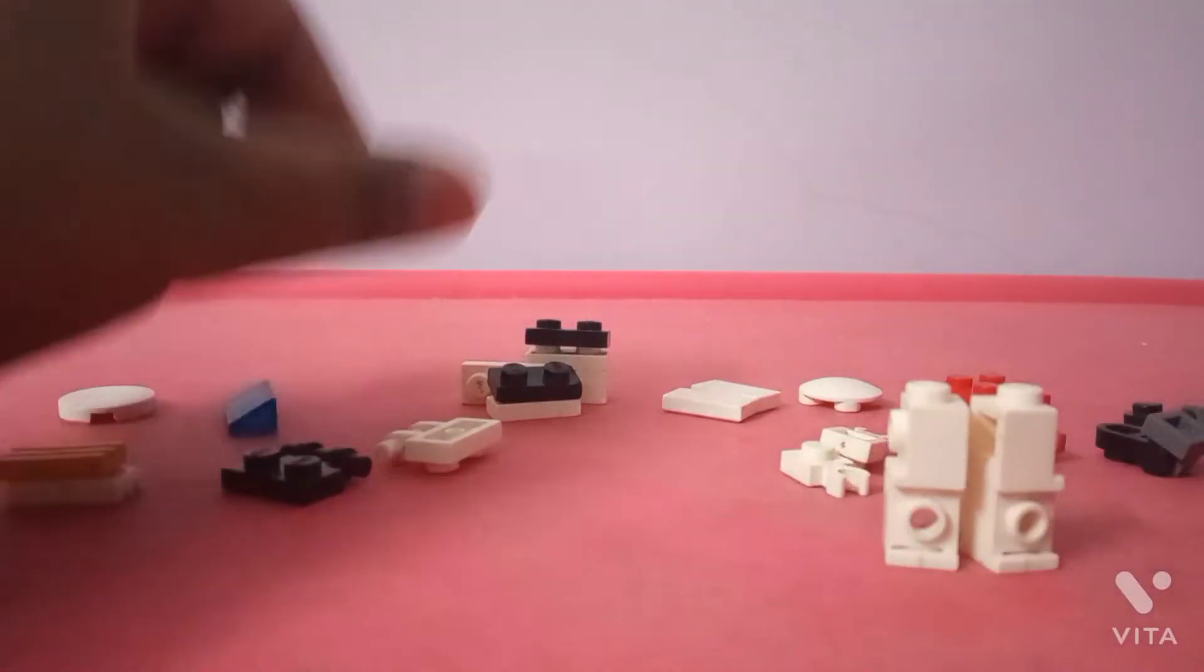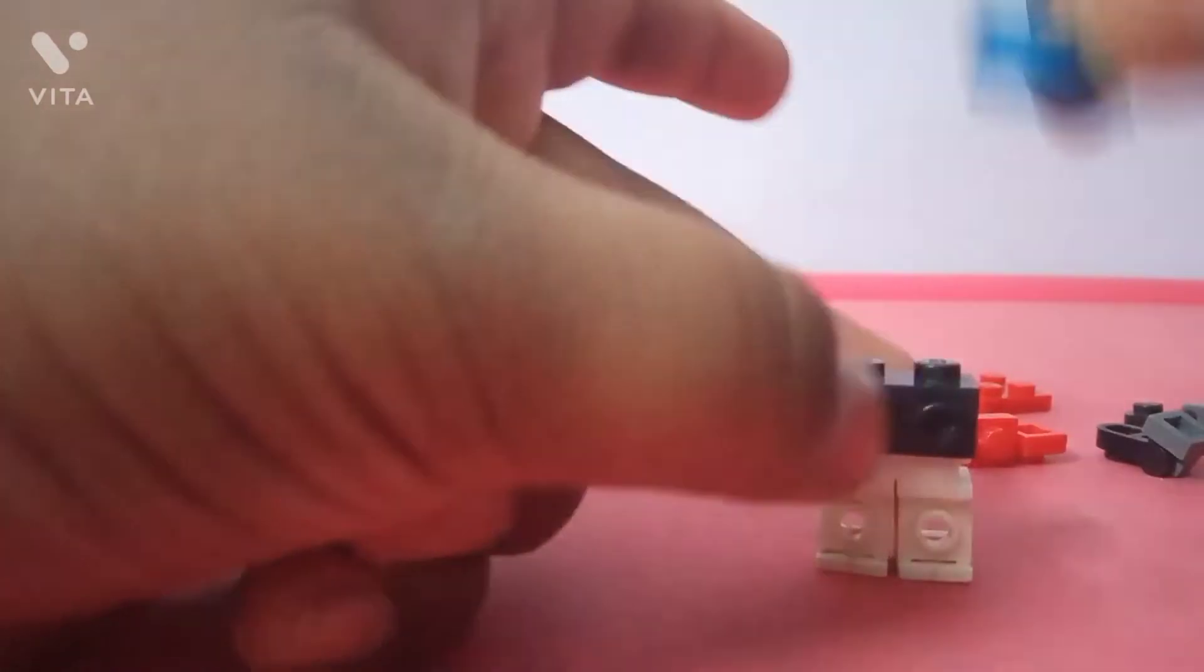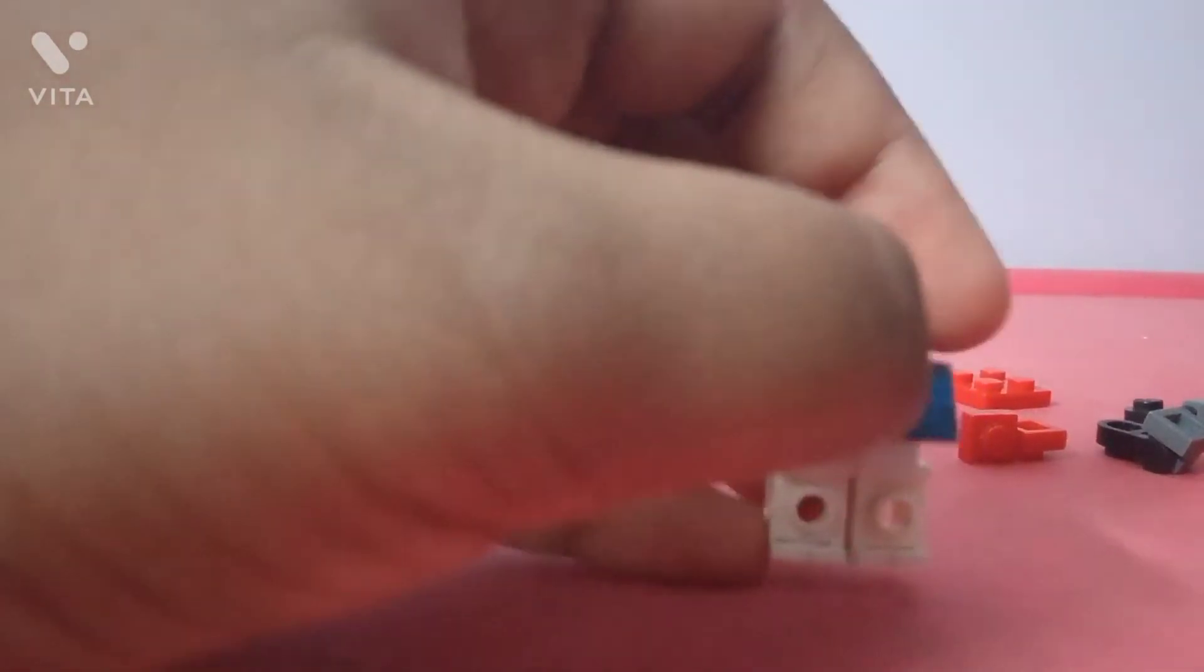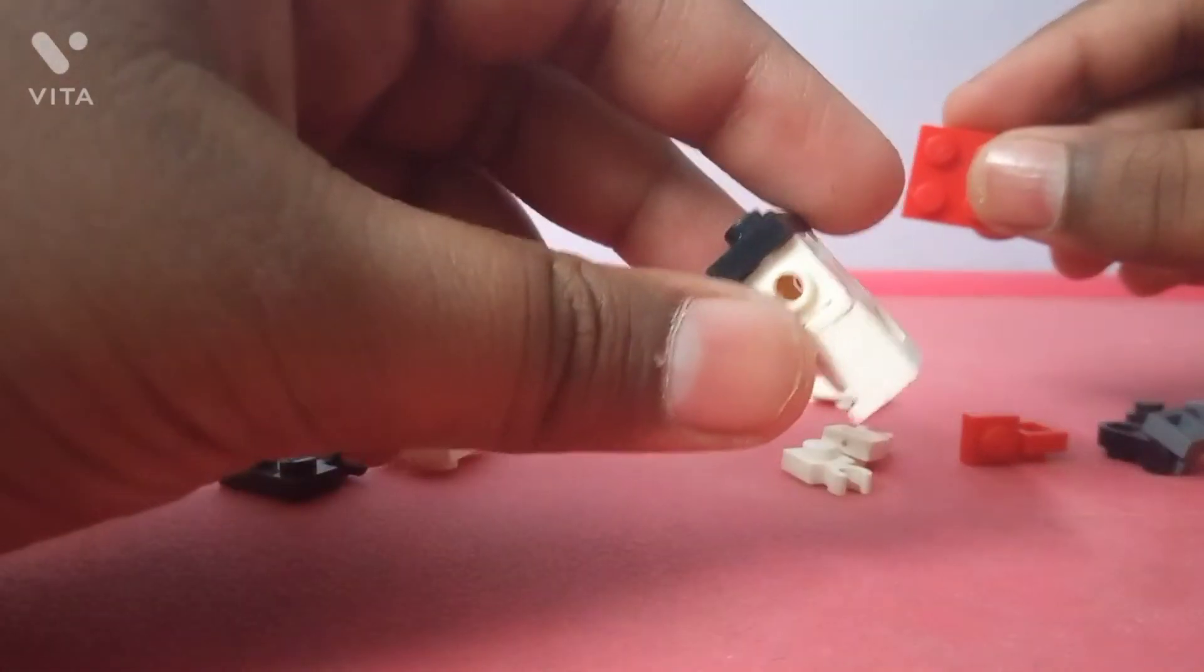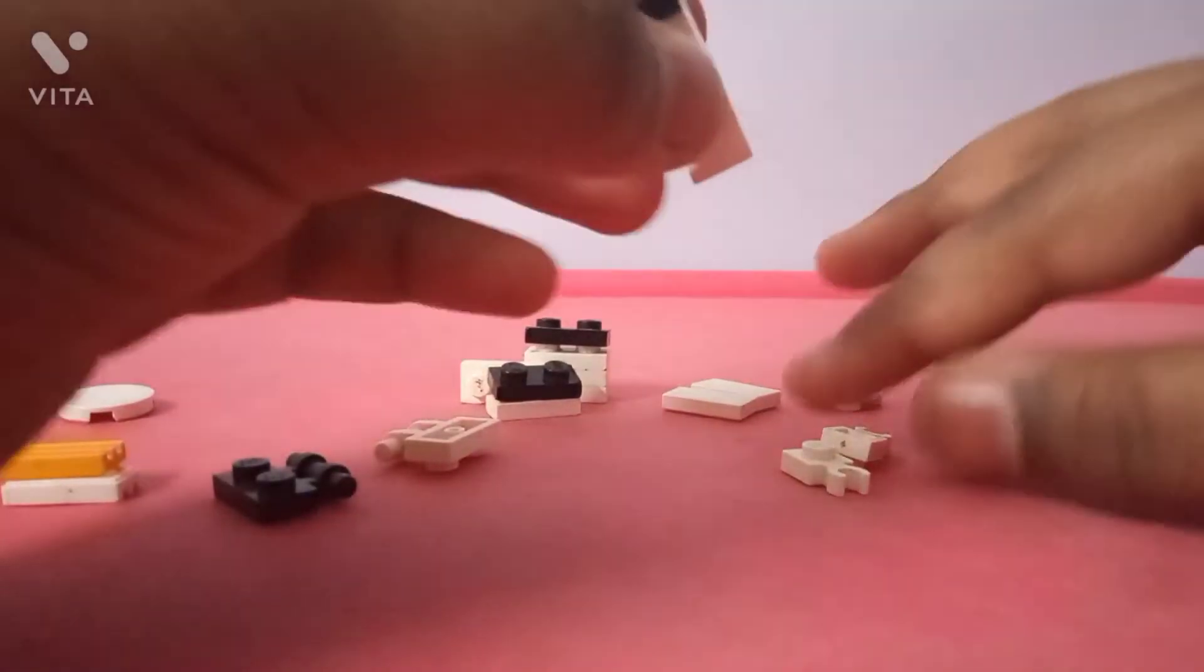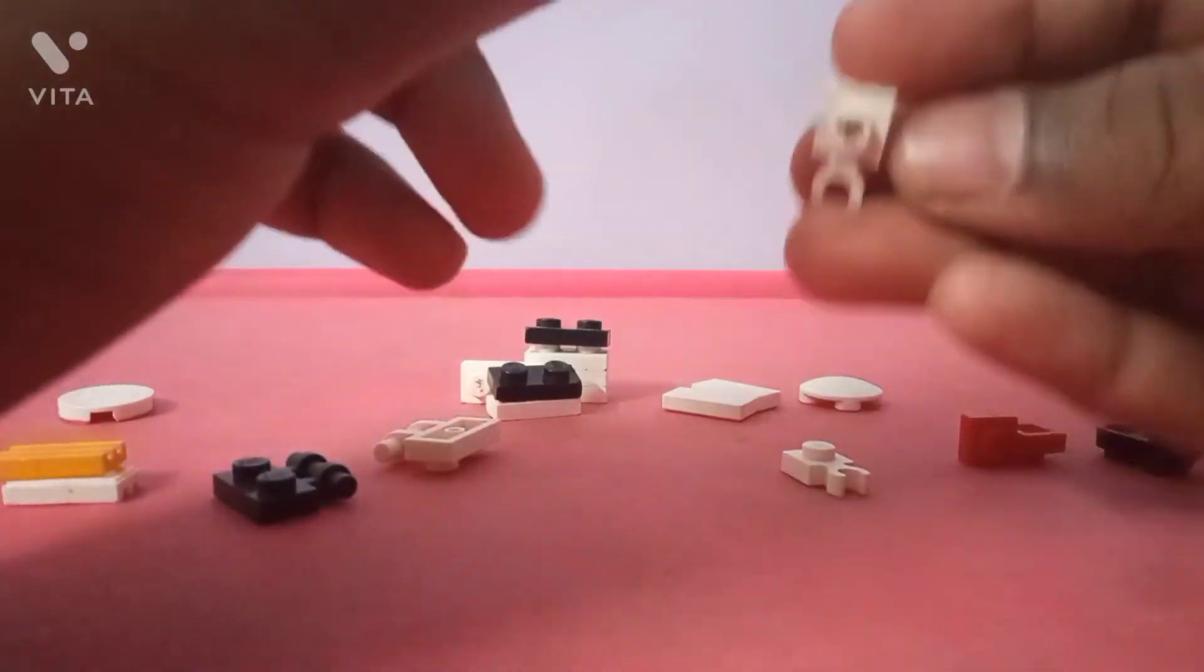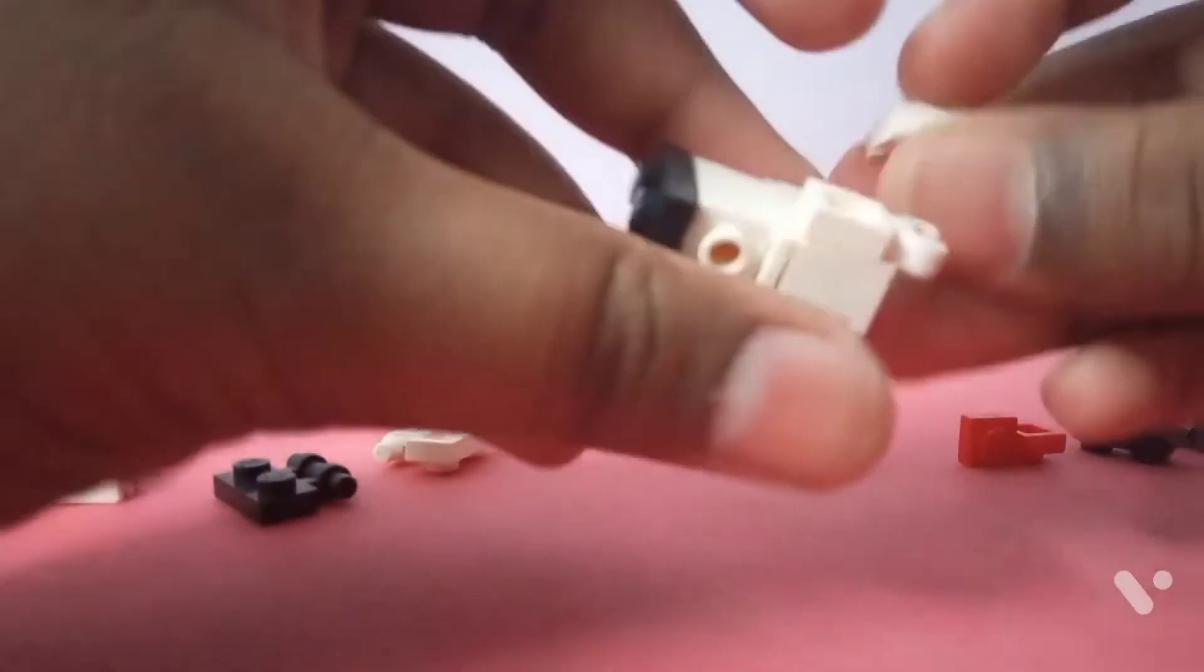Then you're gonna take your 1x2 bracket, then put it on top just like that. Then you're gonna take your 2x2 T slope and put it in this specific way. Then you're gonna take one of your clip things and place it on the back of the headlight brick. Do the same for the other one.